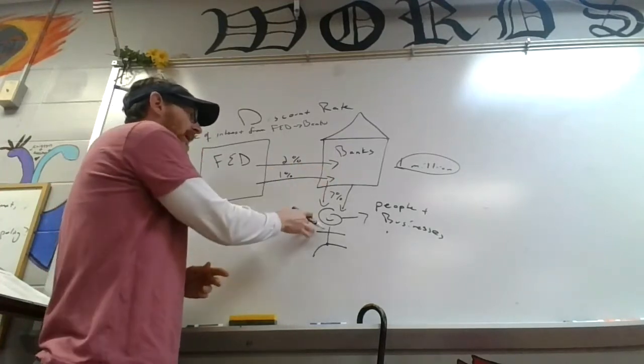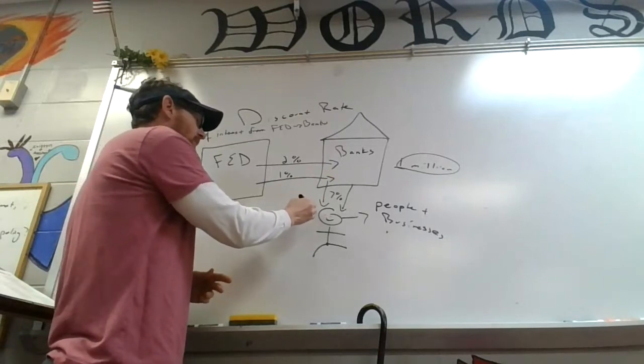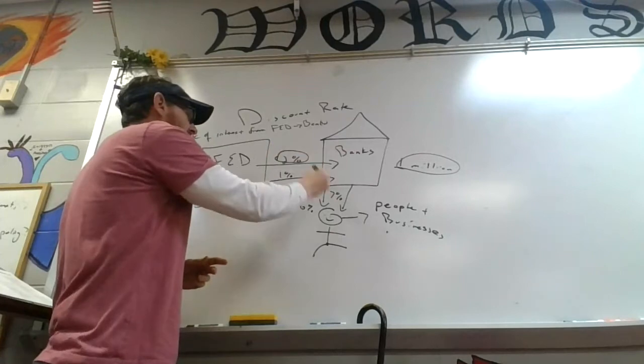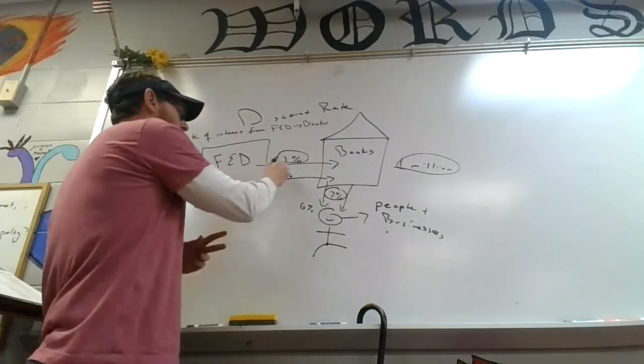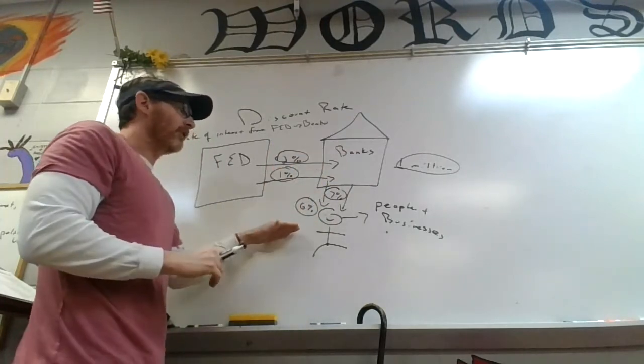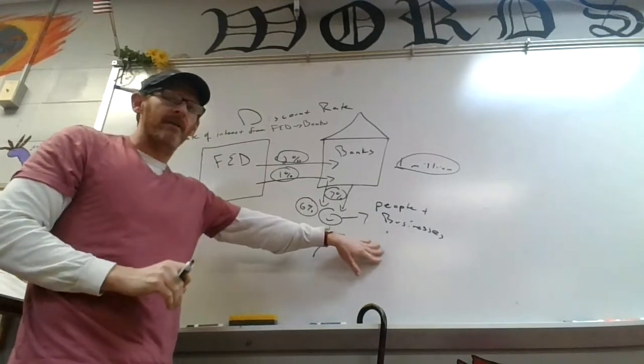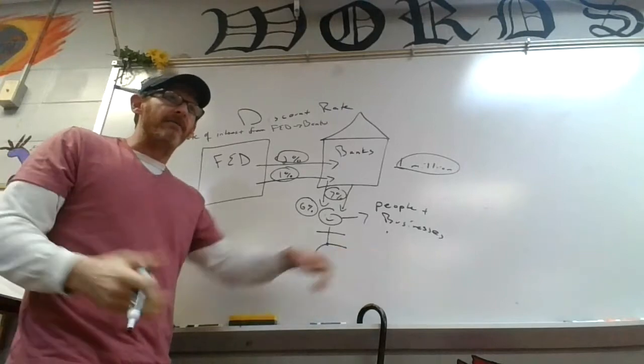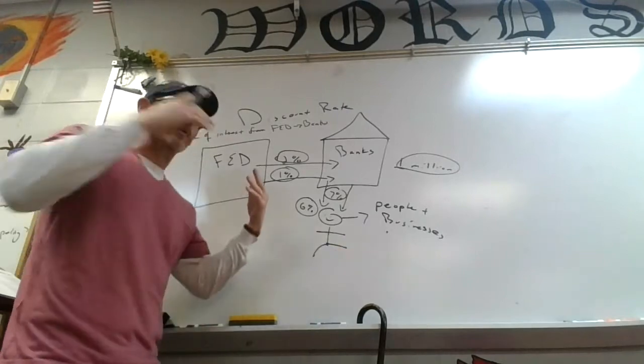Well that means the banks can start charging people less money, let's say 6%. So again, in both cases, whether it's 2% and 7% or 1% and 6%, the banks are still making a profit and people are still getting money and businesses are still getting money so they can go out and invest and start their firms and start selling their products.